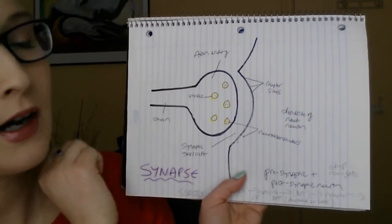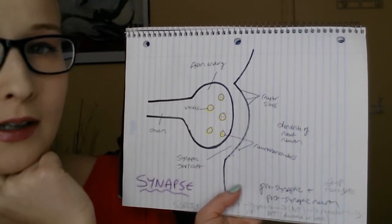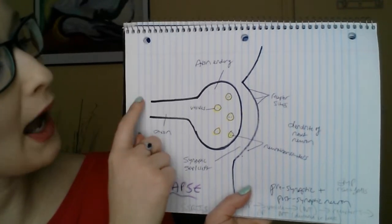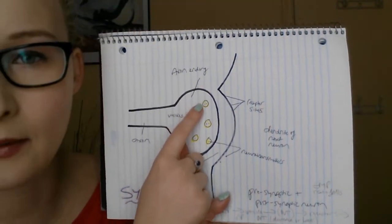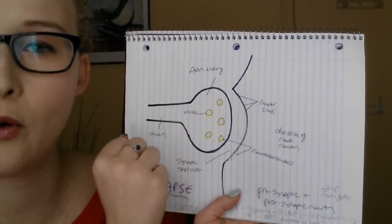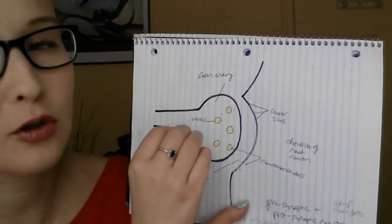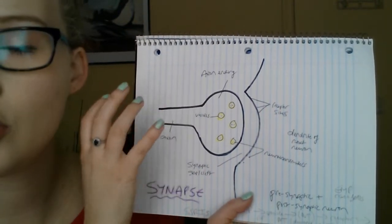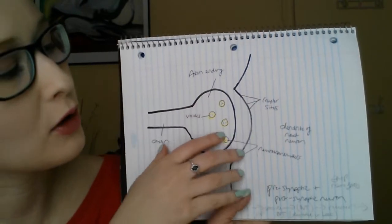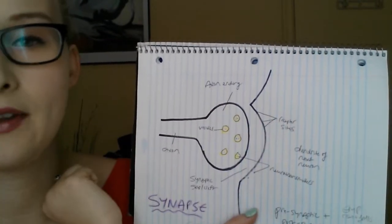I'll explain how information is relayed between the two cells. The first cell reaches something called an action potential if it gets enough energy. An action potential is basically a threshold related to membrane potentials, and once it's reached, the cell is able to communicate with the next cell.